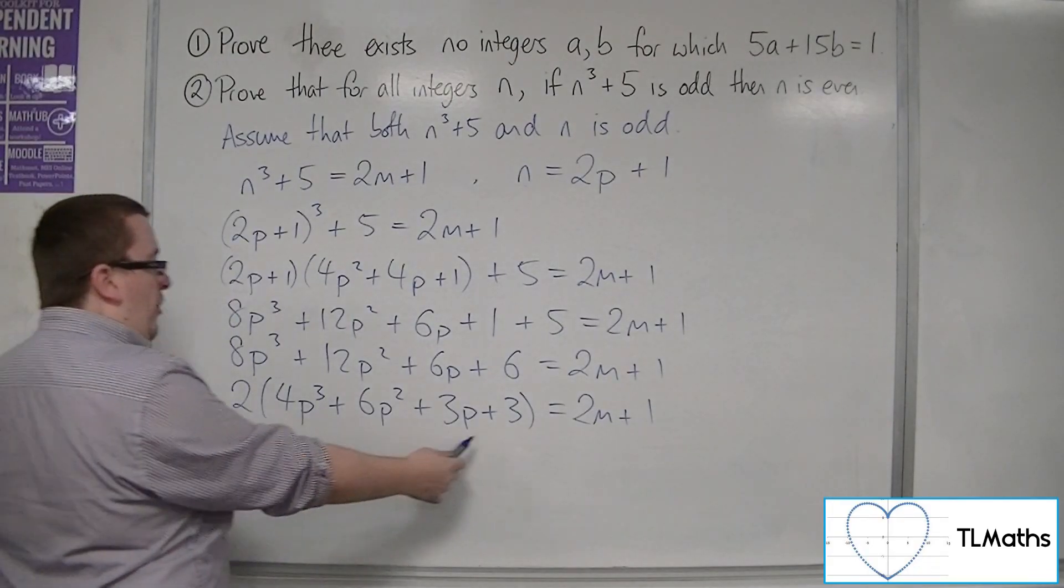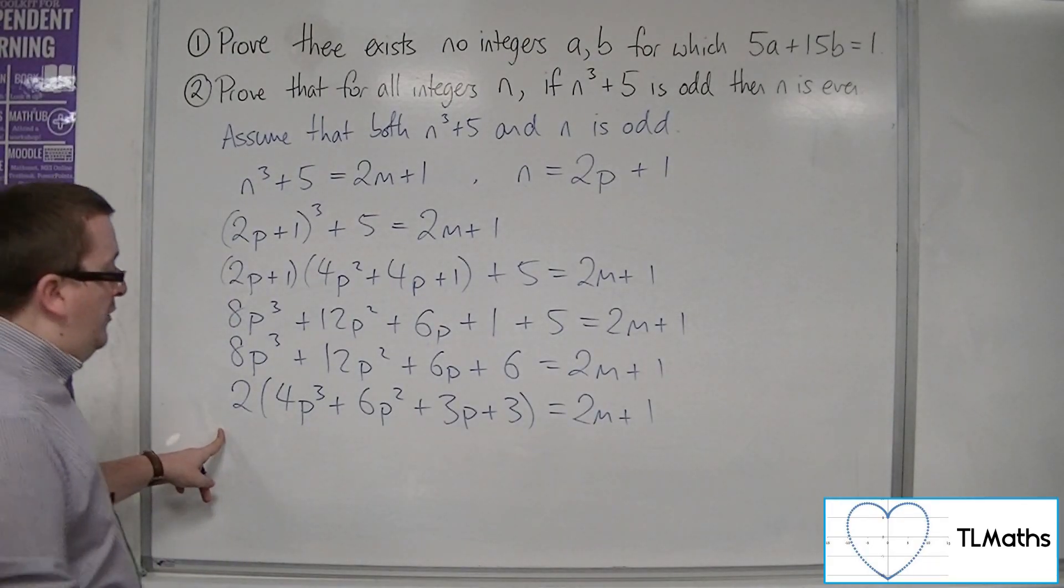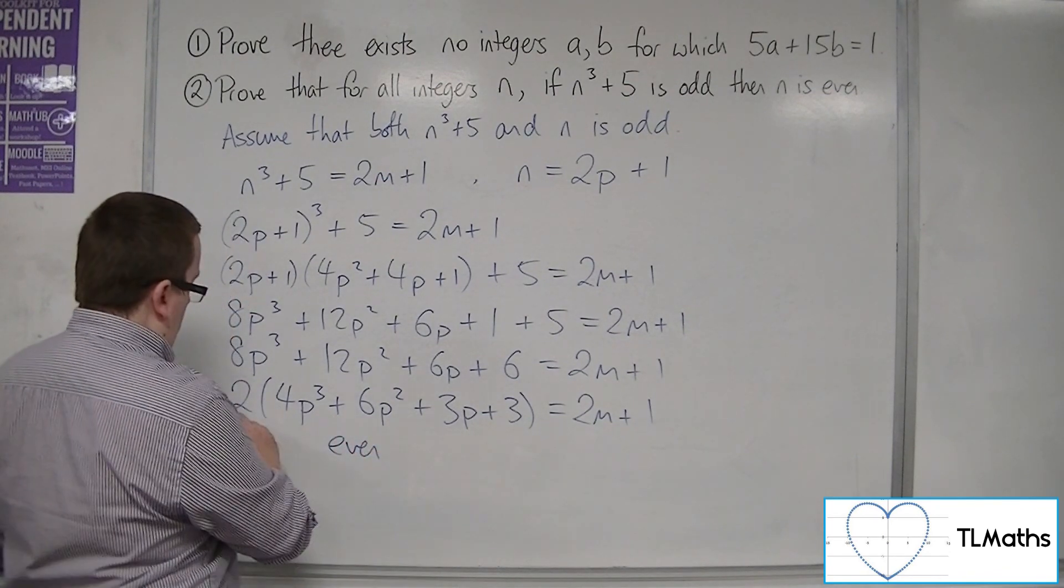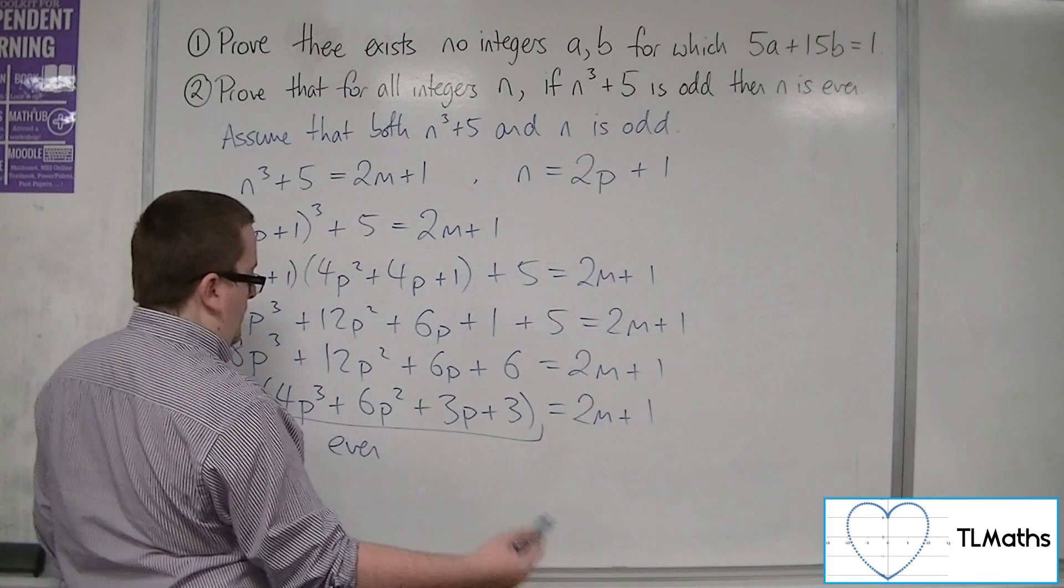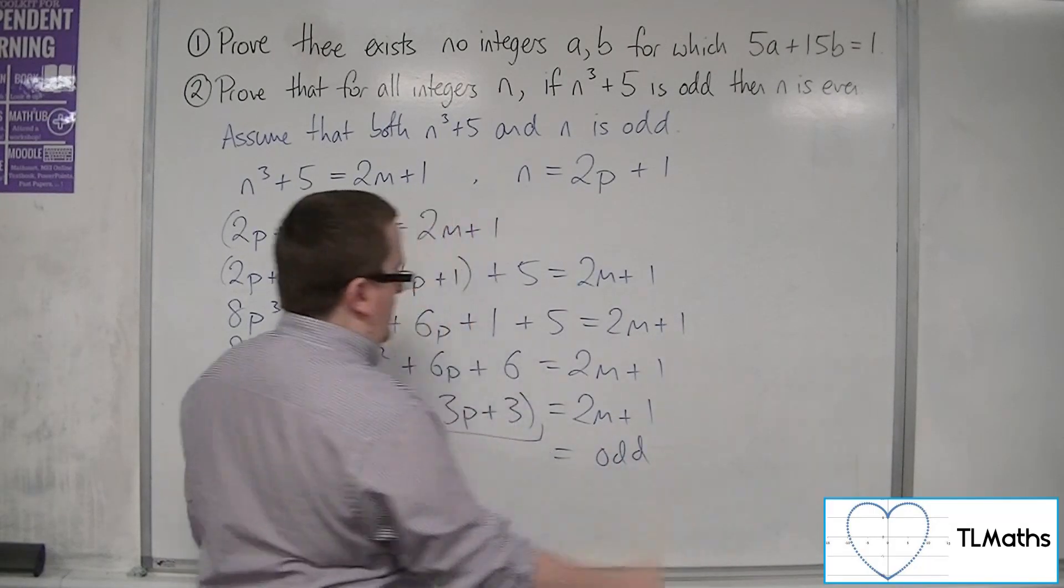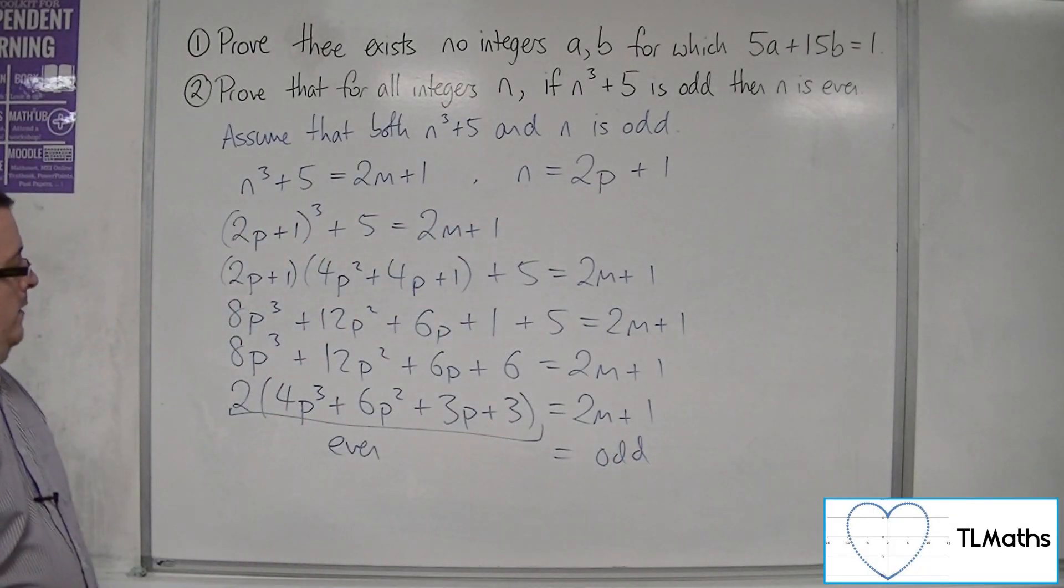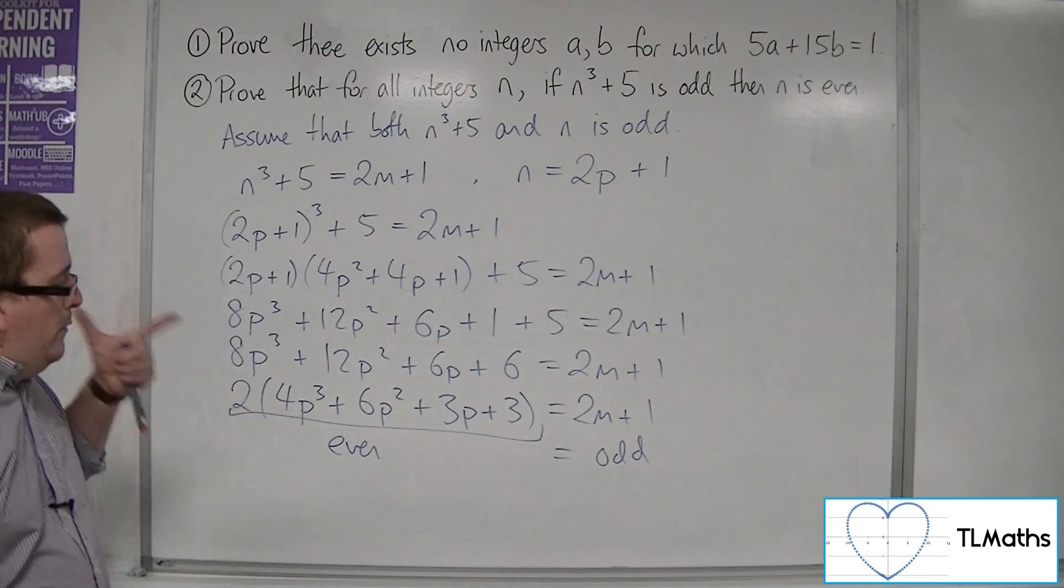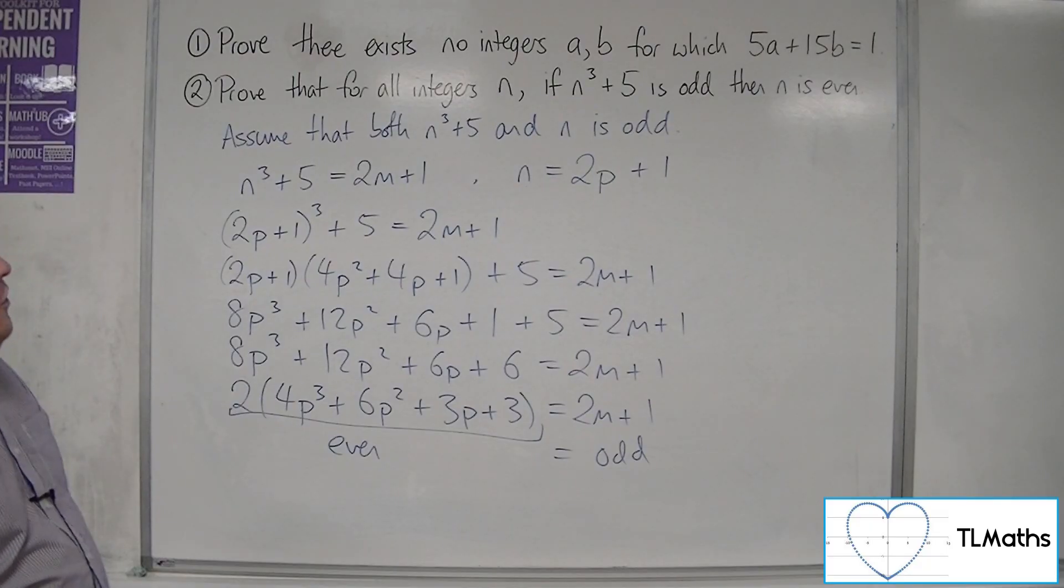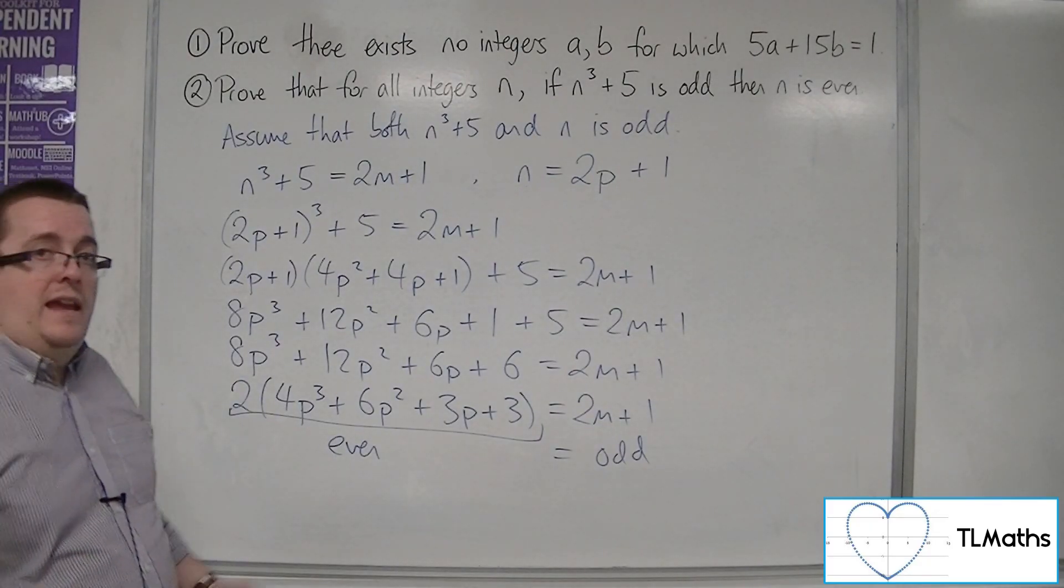Now, this, because 2 is a factor, must be even, that whole thing. But this number over here, well, that's odd. So that would mean that there would have to be some number which is both even and odd in this case, which clearly isn't true.